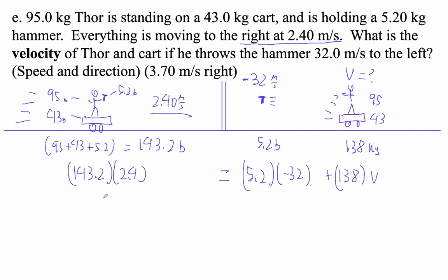So 143.2 times 2.4. This is 343.68. 5.2 times negative 32 is negative 166.4 plus 138 v. So I've got to get this term all by itself because then I can divide.